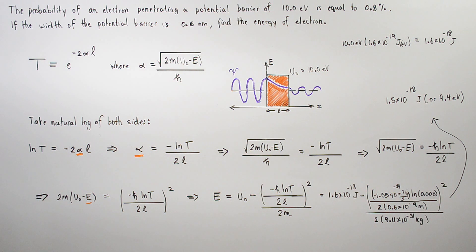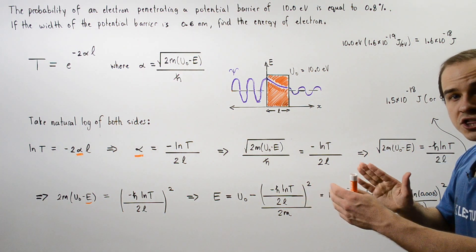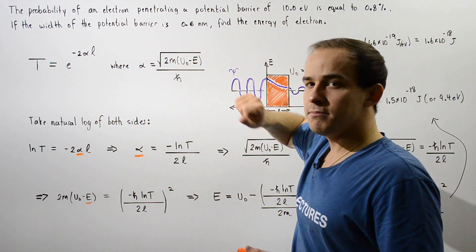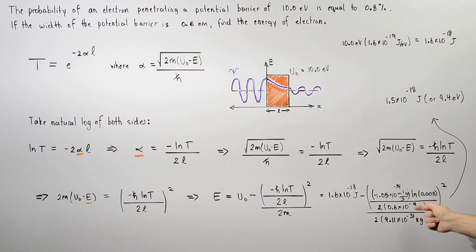We plug in our quantities and we note that the L, the width must be given in meters. To convert from nanometers to meters, we take 0.6 and multiply it by 10 to negative 9. We get, on the inside, negative 1.05 times 10 to negative 34 multiplied by natural log of 0.008. This is our transmission coefficient T. We divide that by 2 multiplied by the length and we take the square of that and then we divide that by 2 multiplied by the mass given in kilograms.